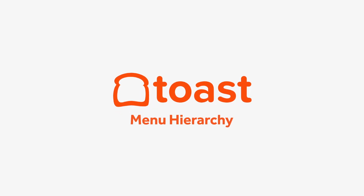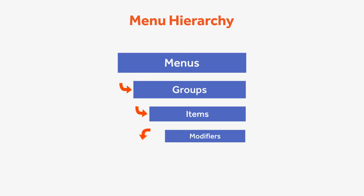Toast uses a hierarchical system to organize your menu into four separate sections: Menus, Groups, Items, and Modifiers.